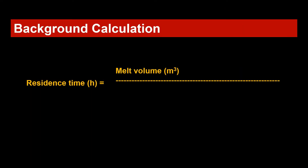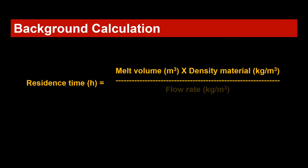The calculation is set up in a simple spreadsheet. We start with the residence time in hours. We need the melt volume of the extruder multiplied with the density of the material — importantly, the density at melt temperature — and divided by the flow rate. This gives us the residence time, and we will now have a detailed look at this online.